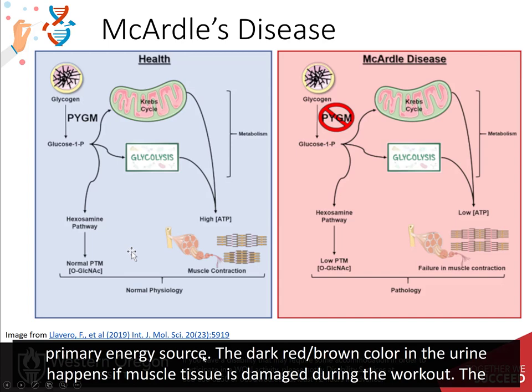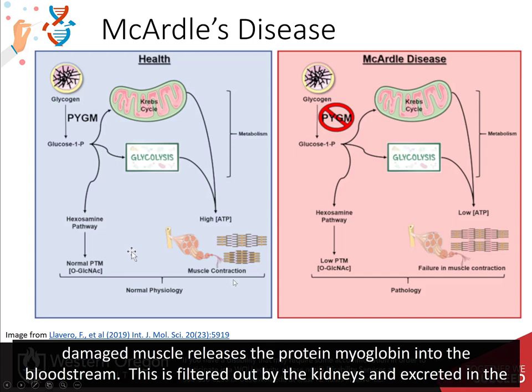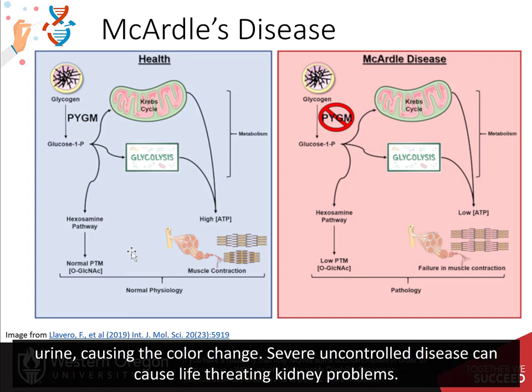The dark red or brown color in the urine occurs when muscle tissue is damaged during the workout. The damaged muscle releases the protein myoglobin into the bloodstream, which is filtered out by the kidneys and excreted into the urine, causing the color change. Severe, uncontrolled disease can have life-threatening kidney problems.